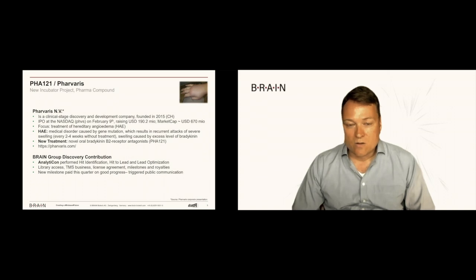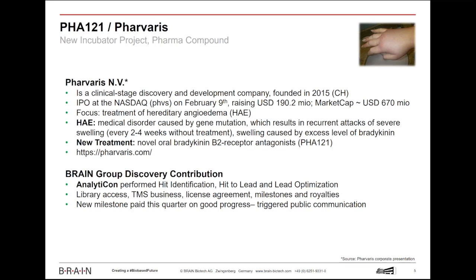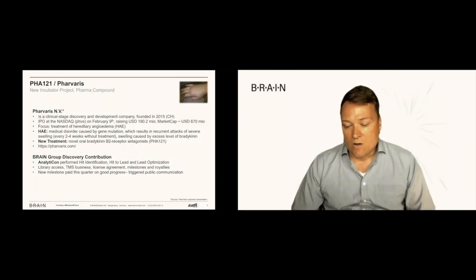Favaris is a development company, has gone as an IPO at the NASDAQ in February of this year and raised about 190 million US dollars for the development. And if you ask now what has Brain to do with it? Well, Analyticon, our daughter company in Potsdam, has basically found the compound, the small molecule, which is now worked on in these clinical trials. We have done the hit identification, we had the lead optimization for Favaris, we gave them access to our extensive libraries, basically re-engineered the peptide in our TMS business, and from here on we will collect milestone payments, royalties, and once the product is on the market, we will collect royalties on net sales. So quite an interesting business model.